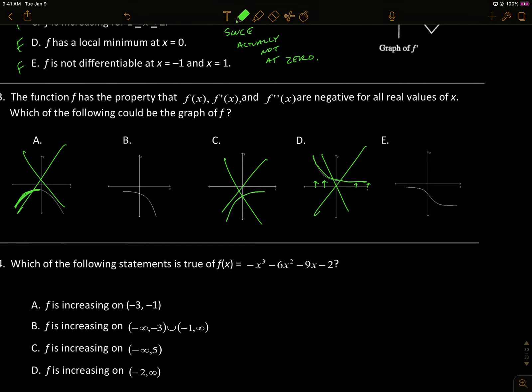So we've got B and E left. F is negative all the time for both because both of them are below the x-axis. f prime is negative for both because they're both decreasing at all times. They're going down always. So f prime is always negative.